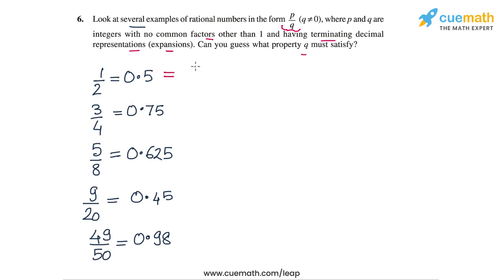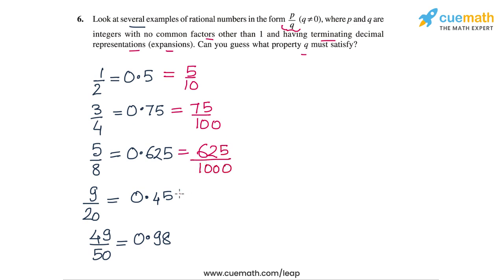1/2, which is 0.5, can be written as 5 by 10. 3/4, which is 0.75, can be written as 75 by 100. 5/8, which is 0.625, can be written as 625 by 1000. 9/20, which is 0.45, can be written as 45 by 100. And 49/50, which is 0.98, can be written as 98 by 100. So is there a pattern you can spot now by looking at the equivalent rational number for each?